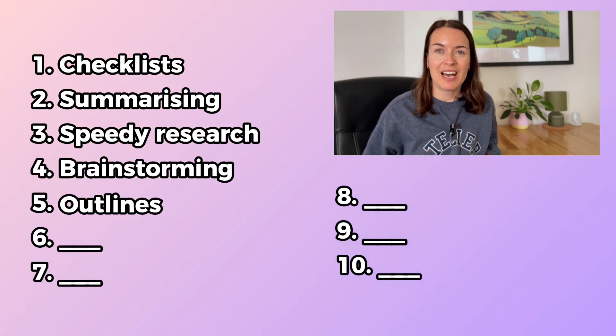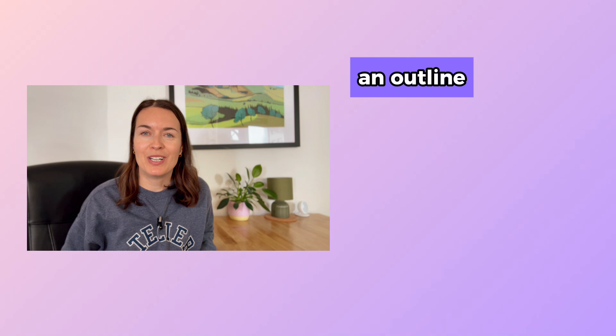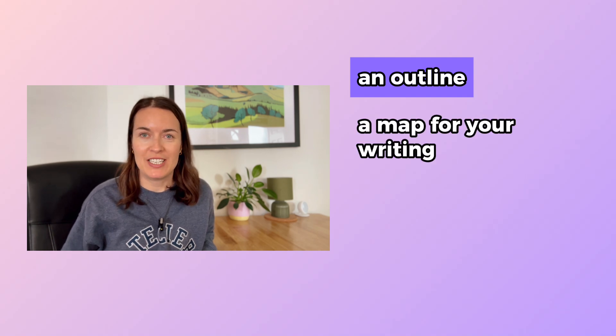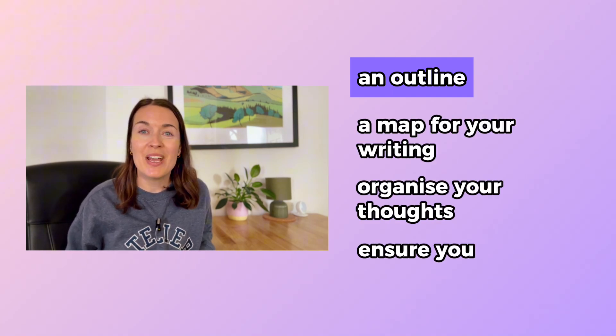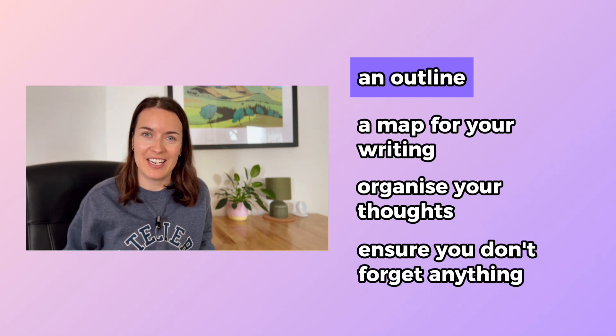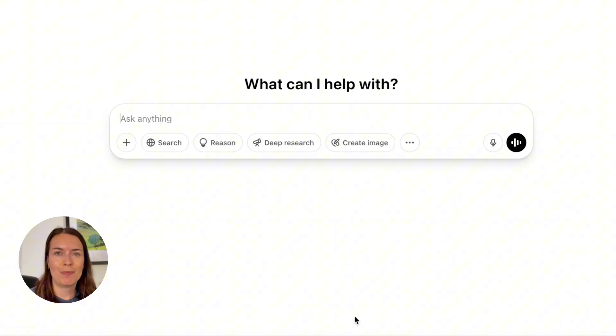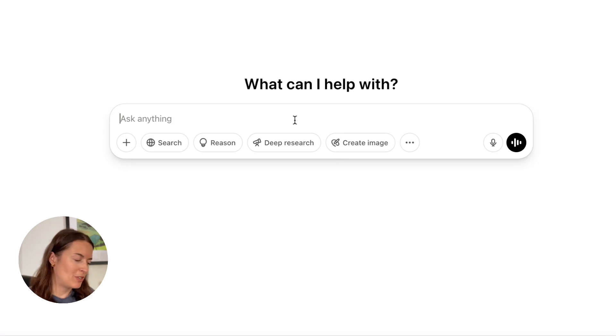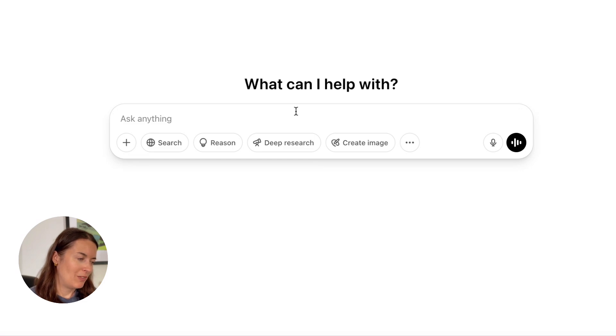Tip number five: creating outlines. Once you've brainstormed some ideas you might need an outline, especially if you're writing something like a blog post, a video script, a marketing campaign, or a project plan. An outline is like a map for your writing — it helps you organize your thoughts and make sure you don't forget anything. I'm going to ask ChatGPT to create an outline.